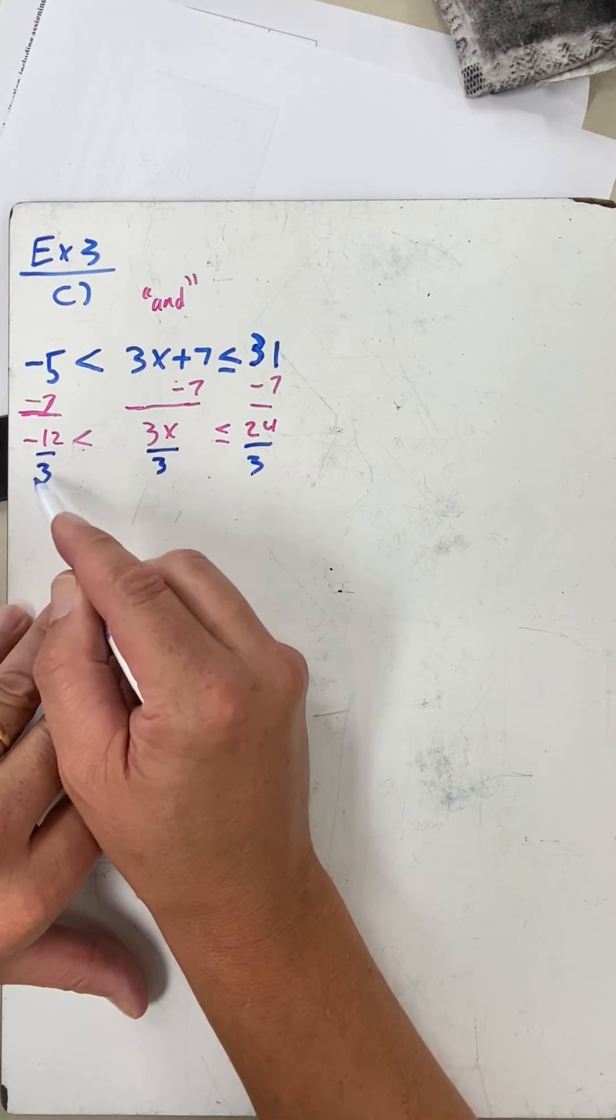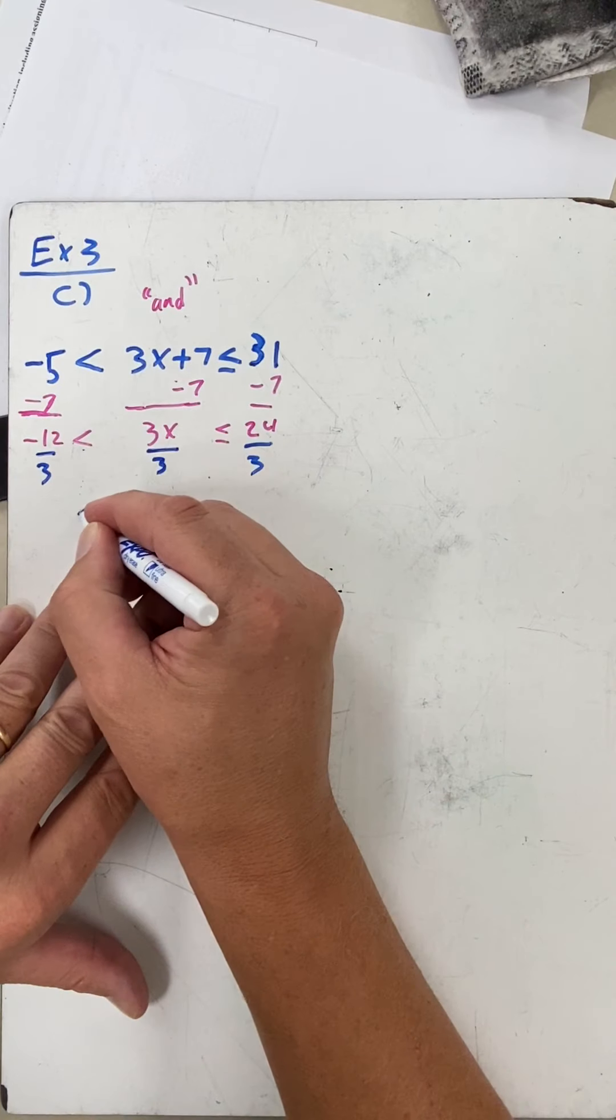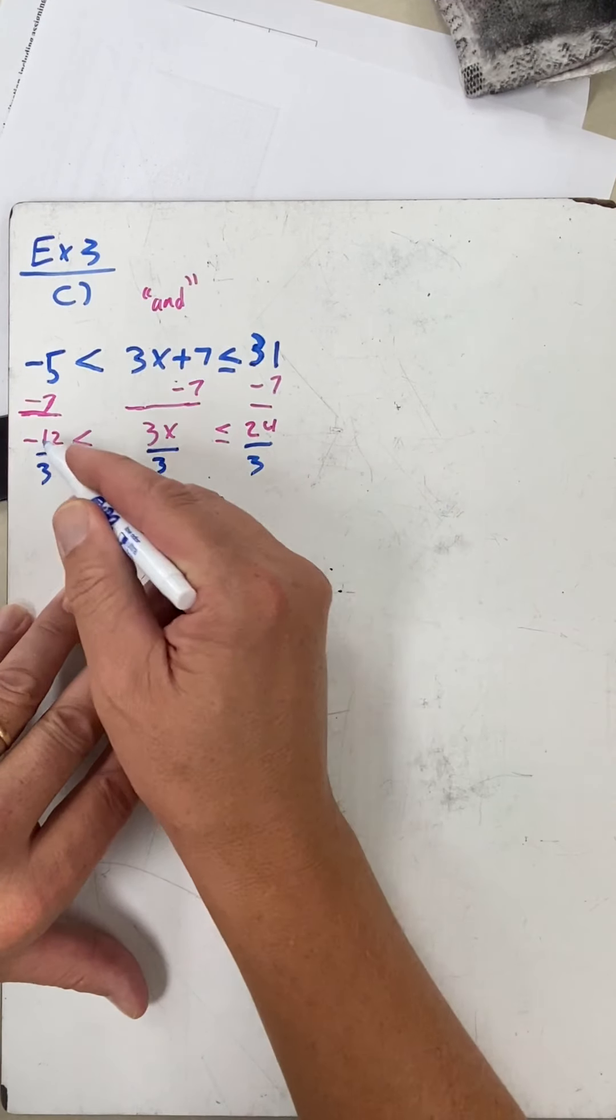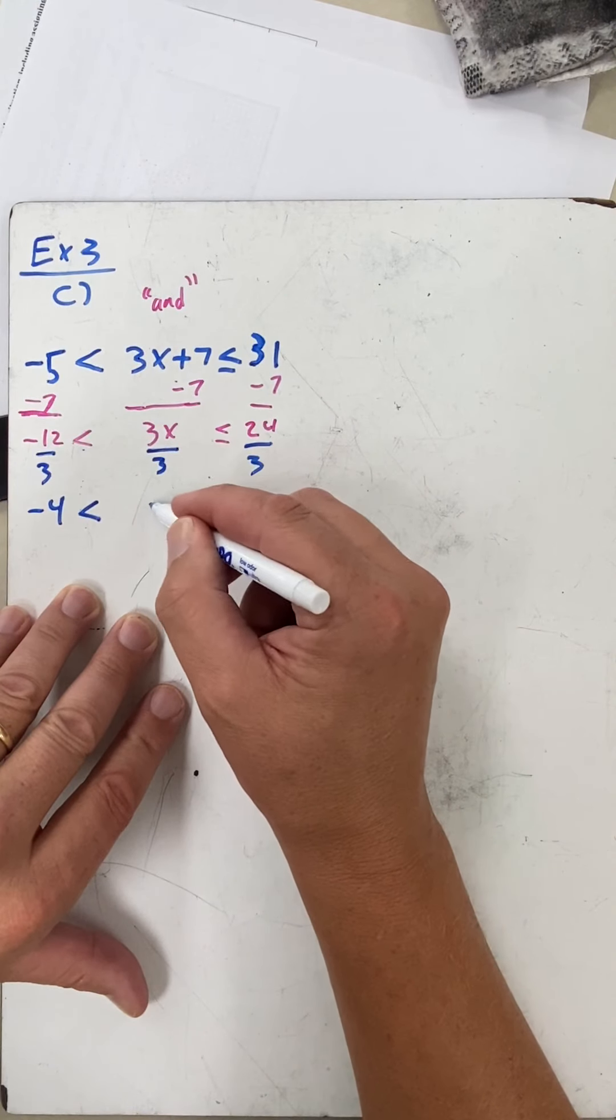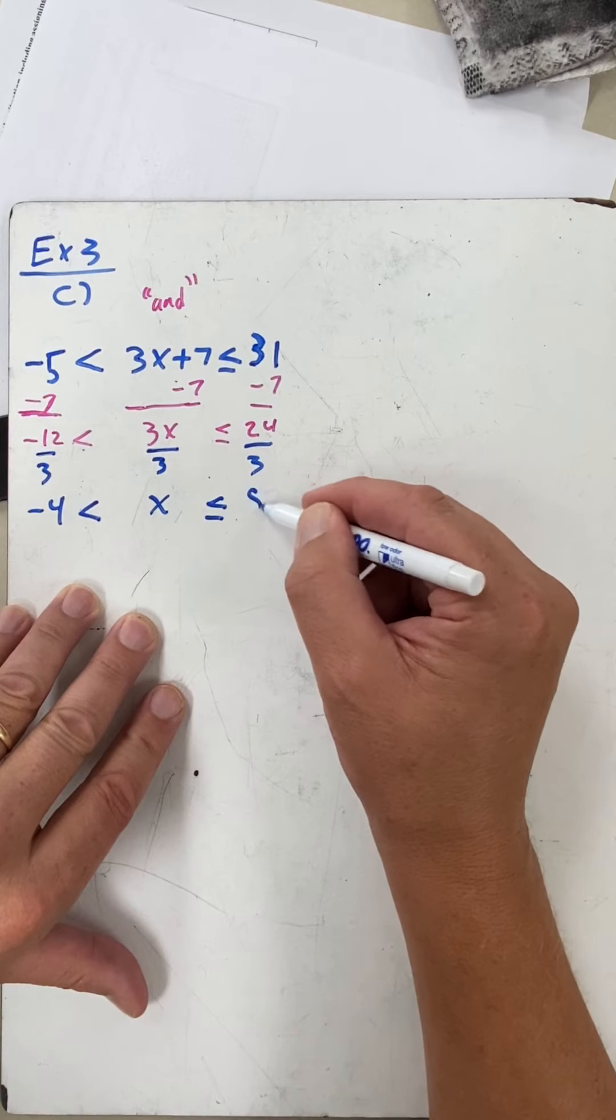The twelve was already negative, three was positive, so it's going to stay that way. Now negative twelve divided by three is negative four. And then here the threes cancel—I'll get x—and now twenty-four divided by three is eight.